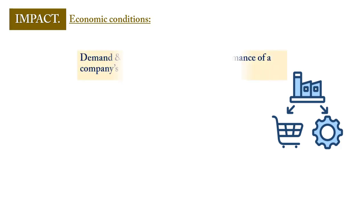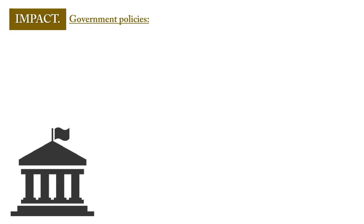Economic conditions such as demand and supply interactions in the market will influence a business's performance. If customers are in a position to demand more, a business is likely to perform better, provided they are able to supply more to meet demand. Government policies such as the introduction of taxes on sales and profits will mean that the outcome of a business's activity may not be favorable.